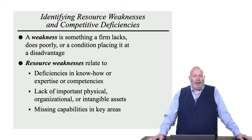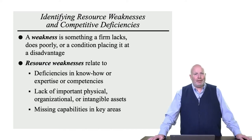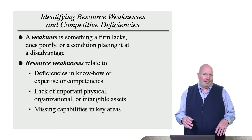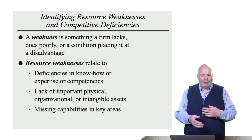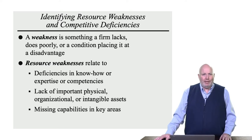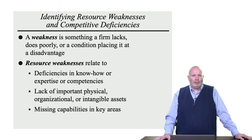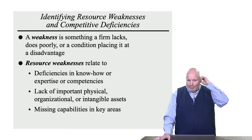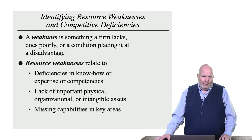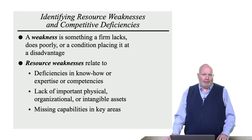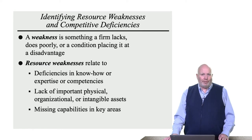When I ask students to do a SWOT analysis, they can often identify strengths. The difficulty is with weaknesses, because firms don't talk about their weaknesses — things they do poorly or that put them at a disadvantage. You often have to look very closely to identify a weakness: deficiencies in know-how, expertise, or competencies; inability to go to market quickly; lack of trademarks or patents; slow decision-making. The opposites of strengths become weaknesses for a firm.